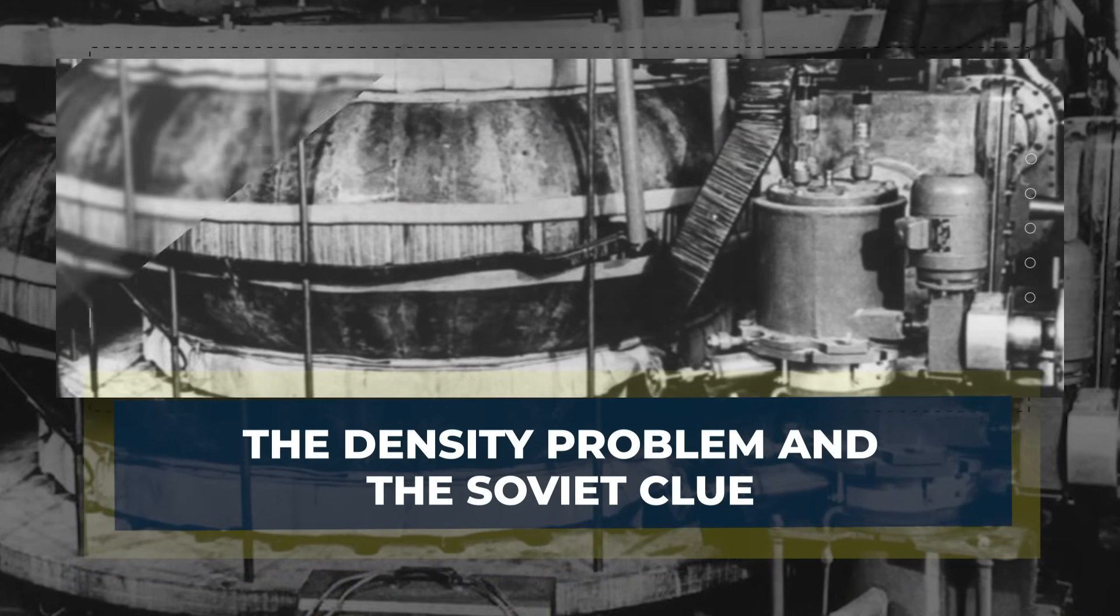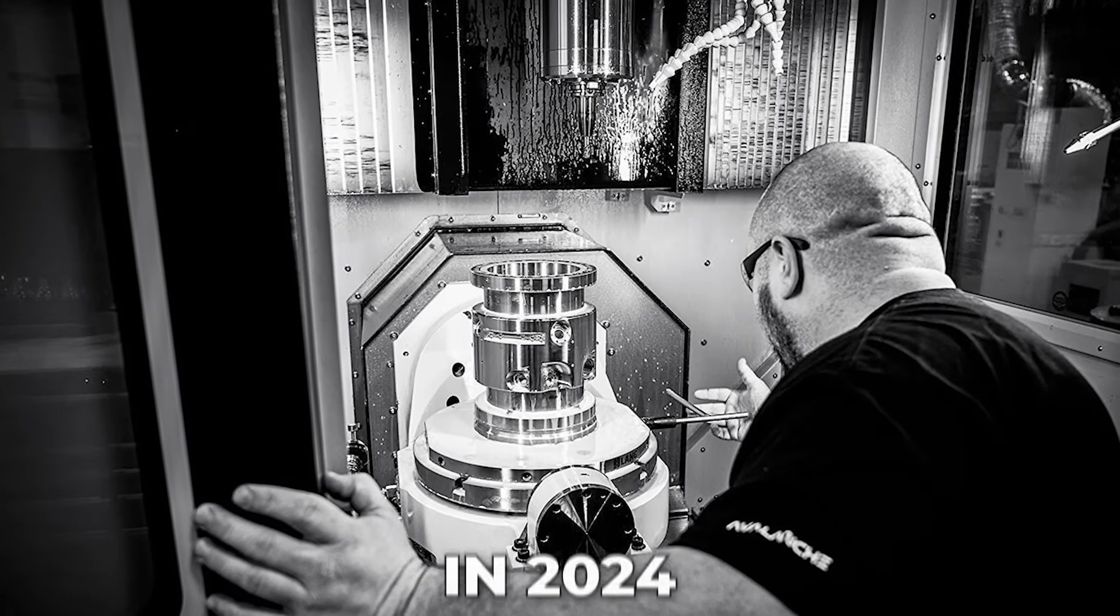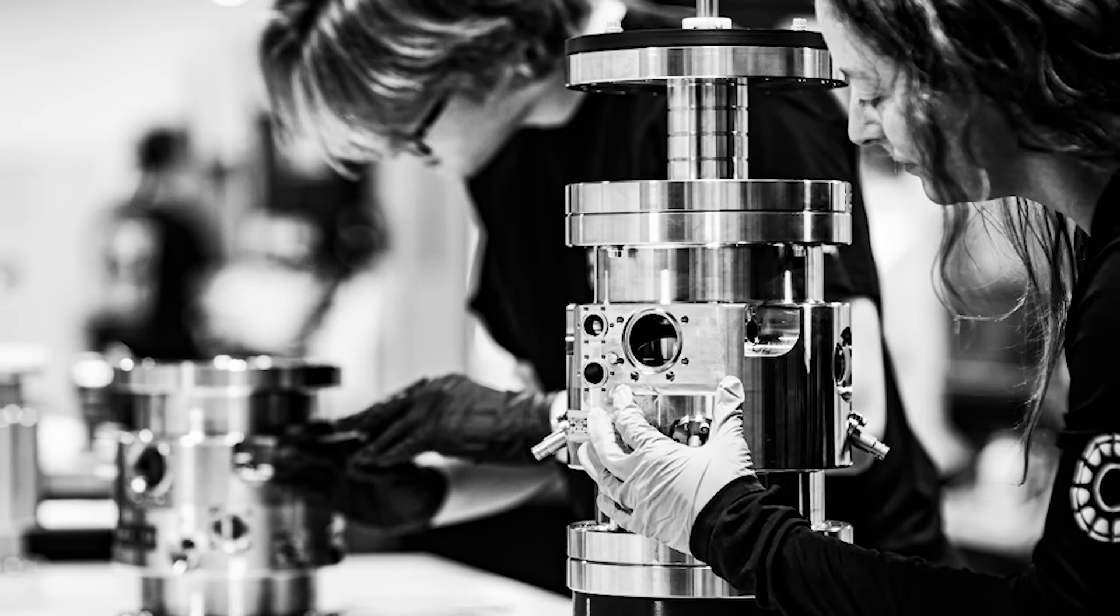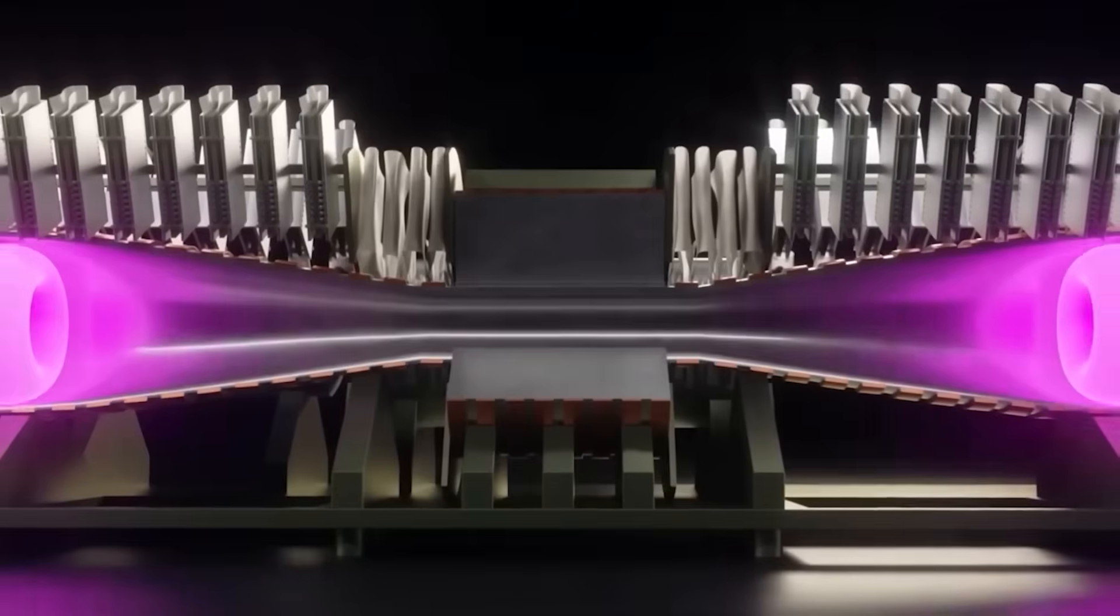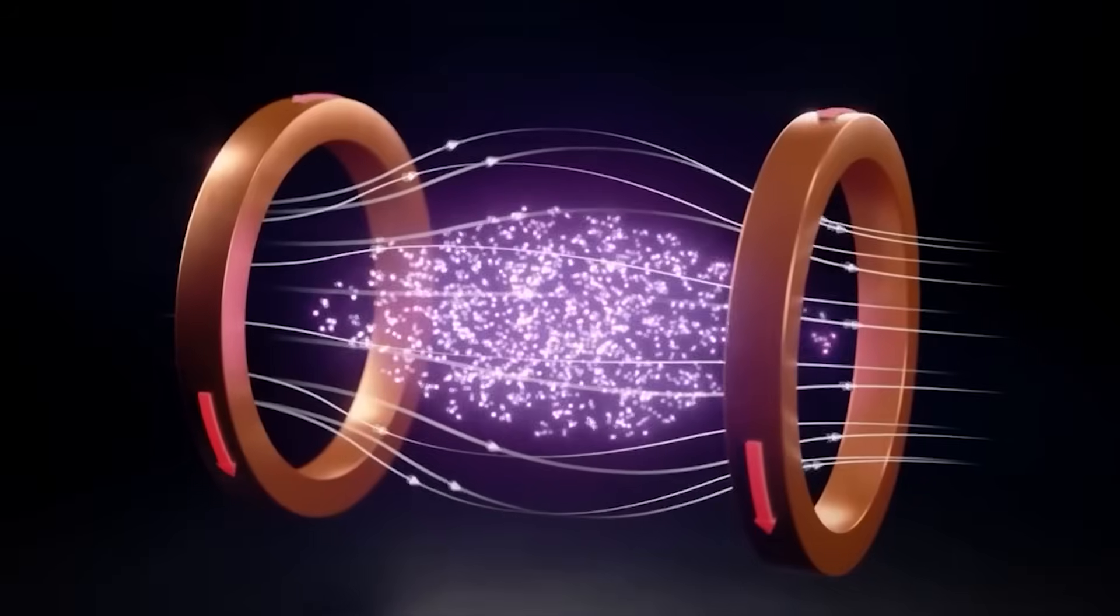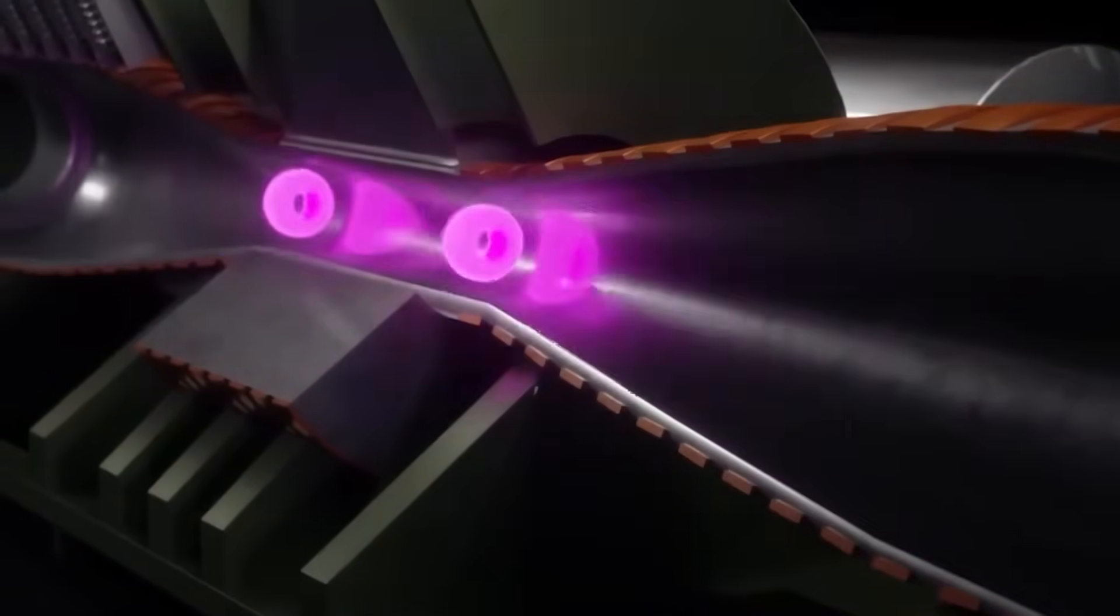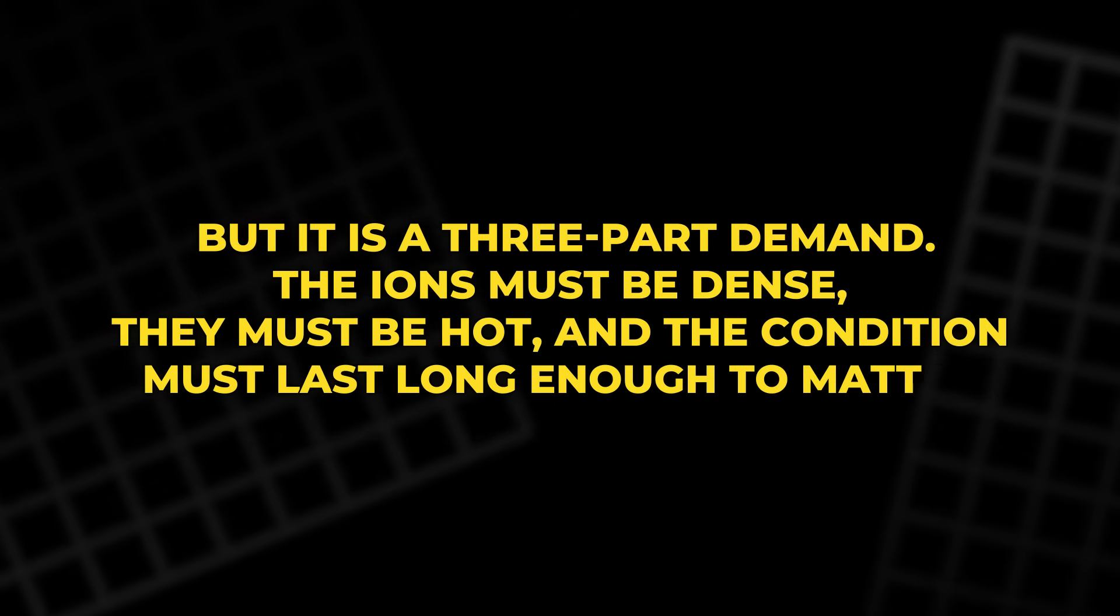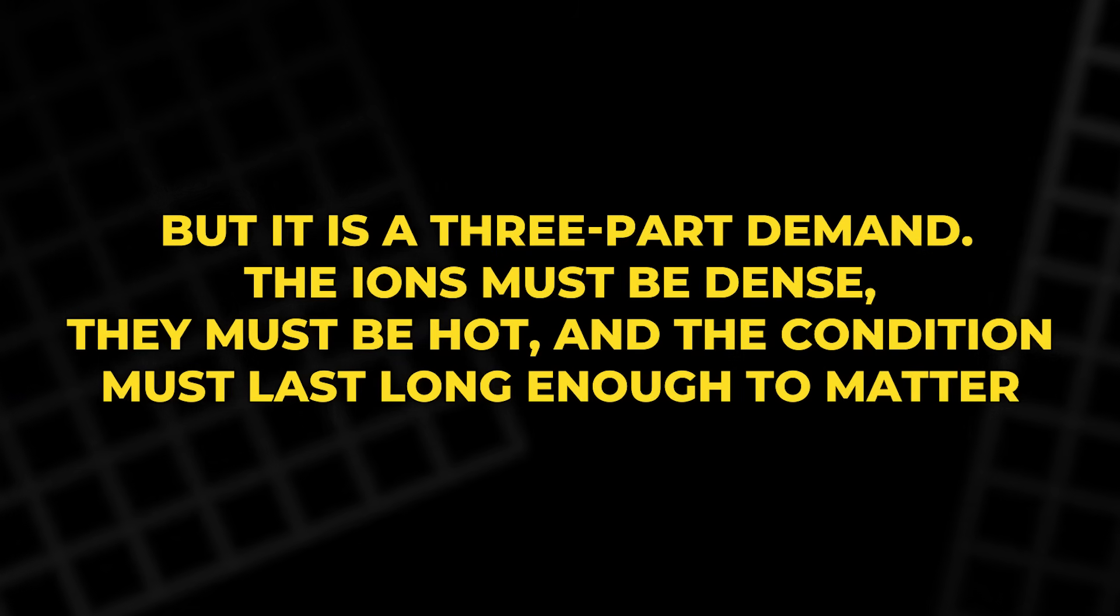Then came the wall. In 2024, they were supposed to hit their density milestone, the last technical milestone for Series A. They had voltage. They had beam injection. Density refused to rise. Density sounds simple. In a fixed volume, pack in more ions that confuse. But it is a three-part demand. The ions must be dense, they must be hot, and the condition must last long enough to matter. If you only achieve it for a blink, it is not a power plant.